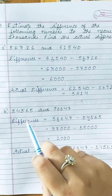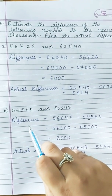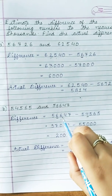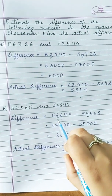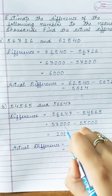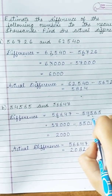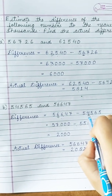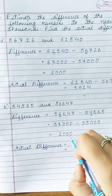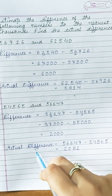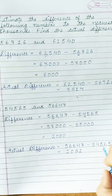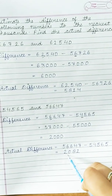Part B: find the estimated difference by rounding off first, then the actual difference. Underline the digits at thousands place. For the first number, observe 6 — greater than 5 — so the underlined digit 6 is increased by 1 to become 7, giving 57000. For the second number, observe 5 — equal to 5 — so 4 is increased by 1 to become 5, giving 55000. Subtract: 57000 minus 55000 gives 2,000. The actual difference (subtracting 54565 from 56647) is 2,082.